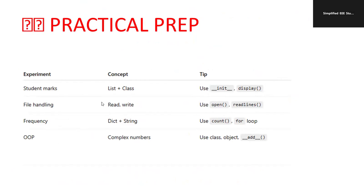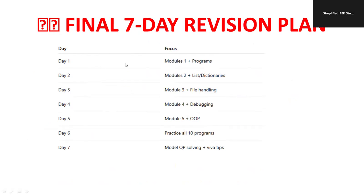For practical preparation, study the __init__ method for student marks, file handling using the open and read method, frequency using the count method with a for loop, and OOP concepts — for example, for complex numbers, using a class and creating an add method using a user-defined function. If you have one week of time: day one — cover module one; day two — module two; day three — module three; day four — module four; day five — OOP concepts; day six — practice all programs; day seven — solve model papers and prepare viva tips. Then your Python subject will be ultimate and I can guarantee you 80 plus.